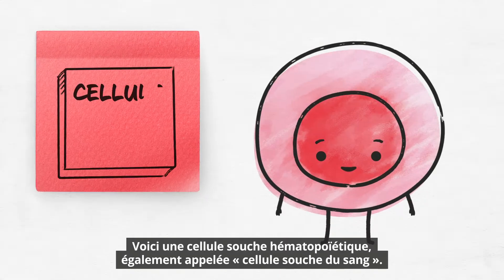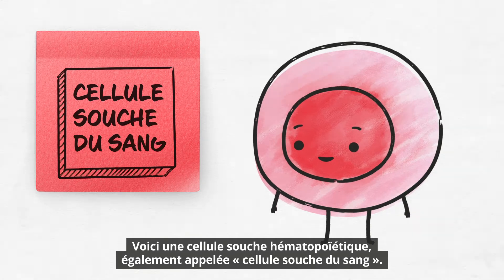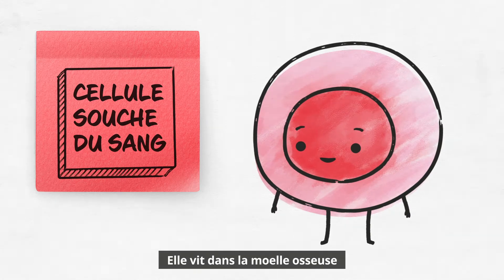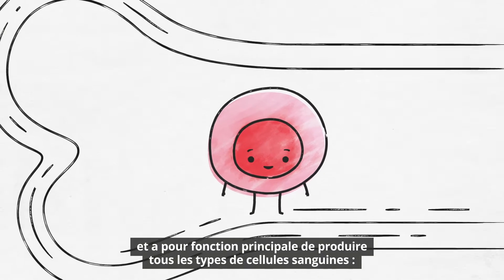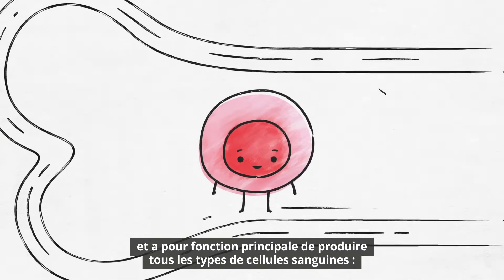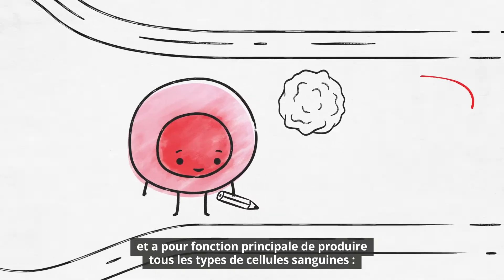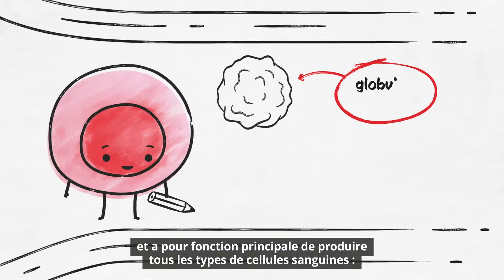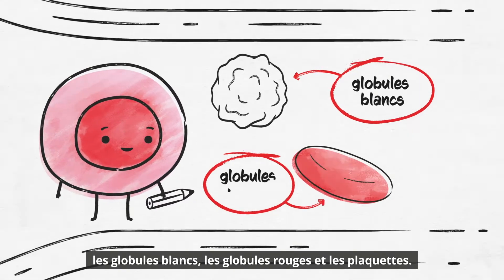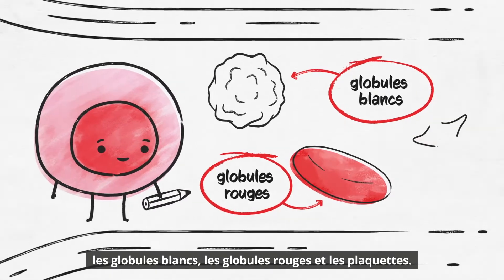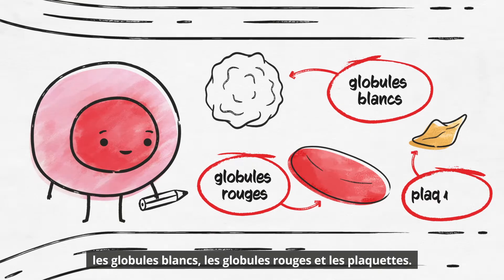This is a blood stem cell. It lives in the bone marrow and its job is to produce all types of blood cells, including white blood cells, red blood cells, and platelets.